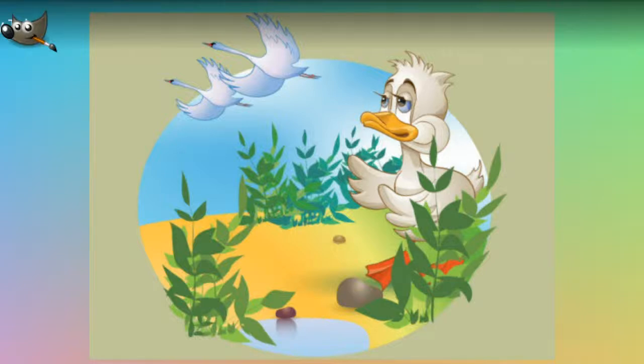The duckling thought one might have a different opinion, but the hen would not allow it. "Can you lay eggs?" she asked. "No. Then will you hold your tongue." And the cat said, "Can you curve your back and purr and give out sparks? No. Then you will please have no opinion of your own when sensible folks are speaking."